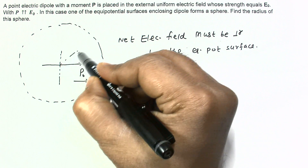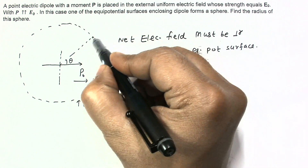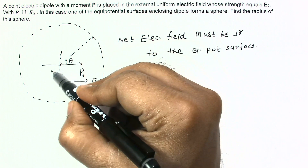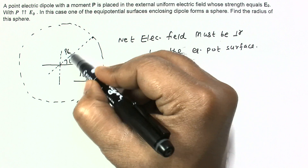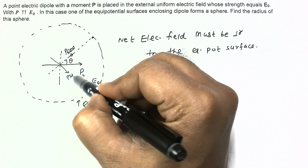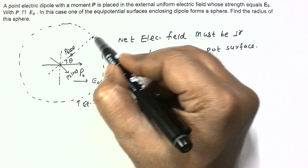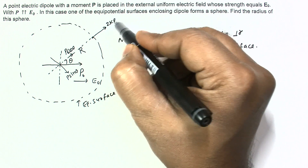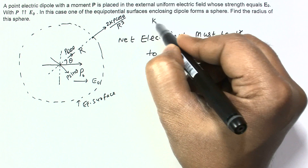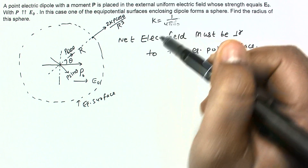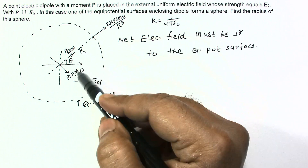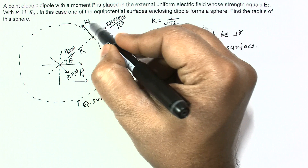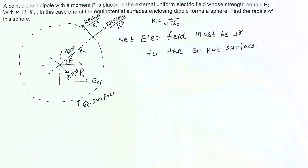If I put a general point here at angle θ, the electric field components due to the dipole can be written as: the radial component is 2Kp cosθ divided by r³, and the tangential component is Kp sinθ divided by r³, where K equals 1 upon 4πε₀. The external field E₀ contributes a component p sinθ in the tangential direction.